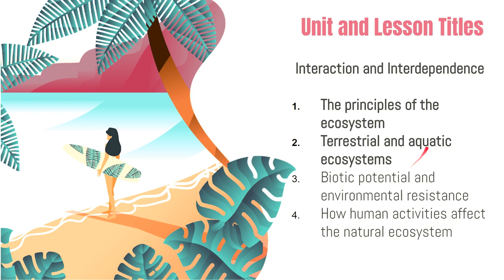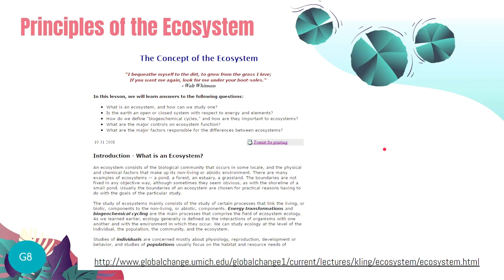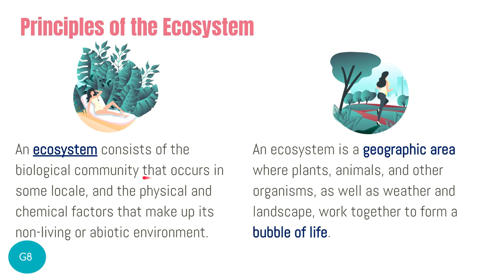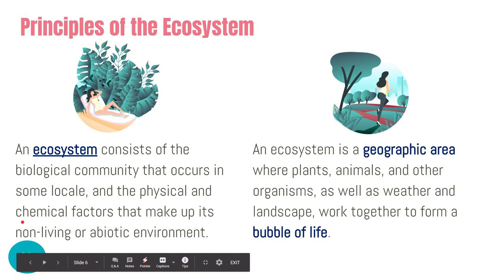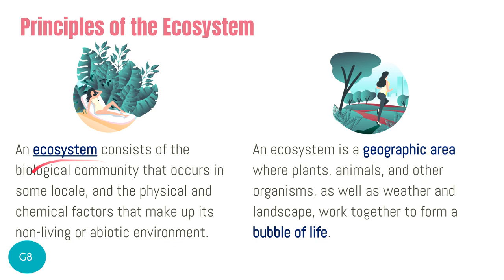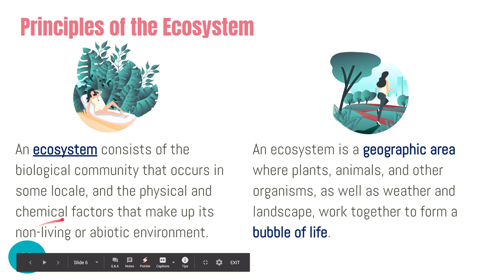In this video we will be looking into the principles of the ecosystem and terrestrial and aquatic ecosystems. I recommend that you visit a website from Global Change that talks more about the concept of the ecosystem — I'll provide the link in the description below. We define an ecosystem as made up of a biological community together with its physical and chemical environment.